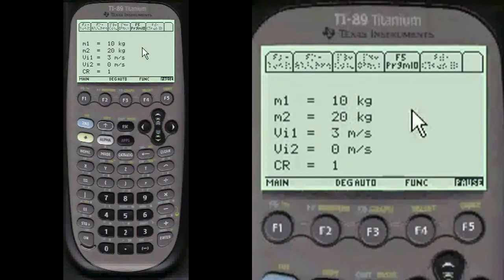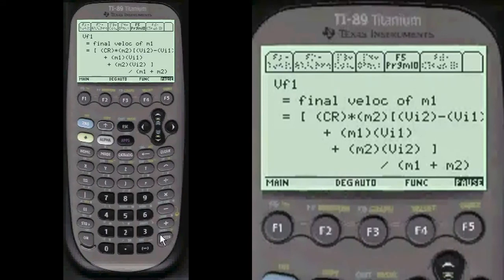I'll show you what you've entered, and you can change it if you want. This looks pretty good to me. We're going to say OK. And I gave you both final velocities of both, because they're both going to bounce off somewhat and go somewhere.